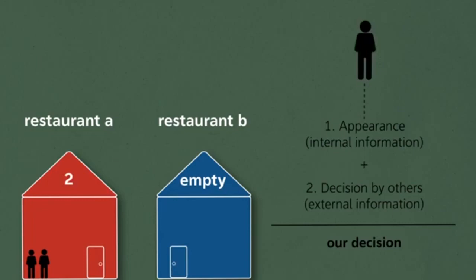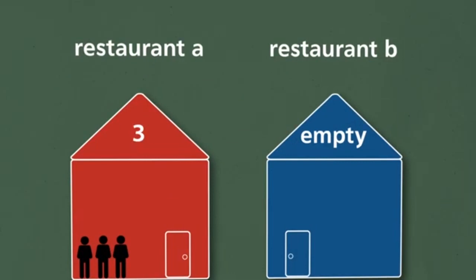Eventually, each customer might end up at restaurant A, which could actually be the poorer restaurant. What's happened is people have ignored their own information and that creates a distorted signal chain.